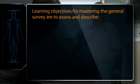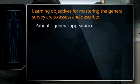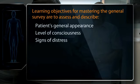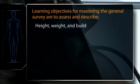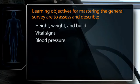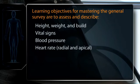Your learning objectives for mastering the general survey are to assess and describe the patient's general appearance, including level of consciousness, signs of distress, apparent state of health, and facial expression; to assess the height, weight, and build of the patient; and to measure the vital signs, including blood pressure, heart rate — both radial and apical — respiratory rate, and temperature.